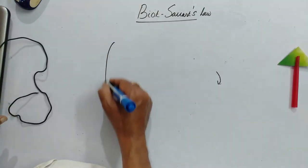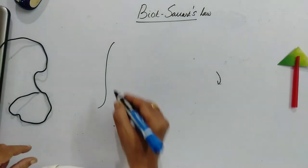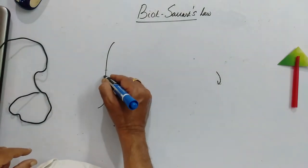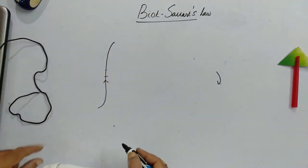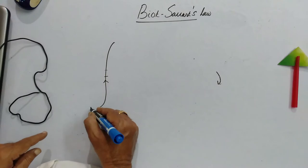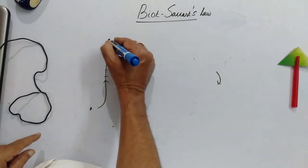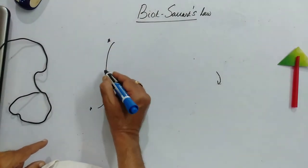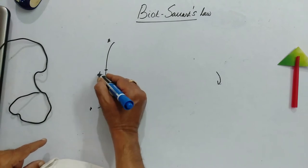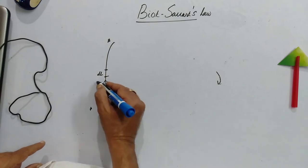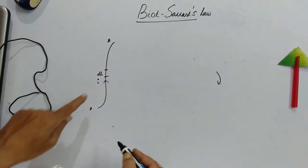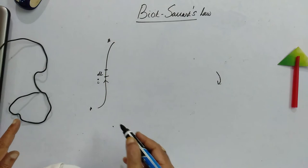So let us write that figure as this one and we will take one small current element. Let's suppose the current is moving in this direction upward from A to B. Then we are considering one small element and the current I is passing through that element.